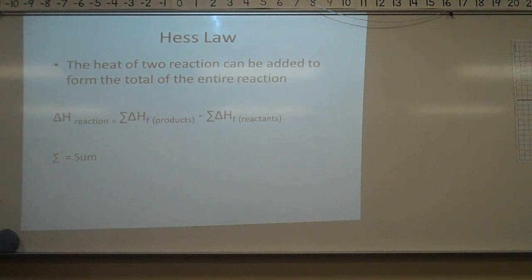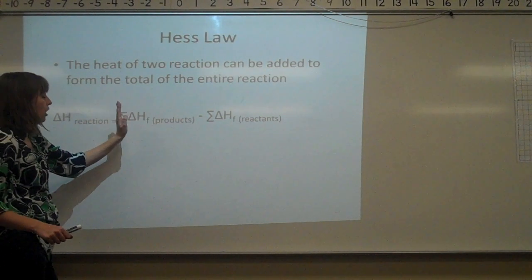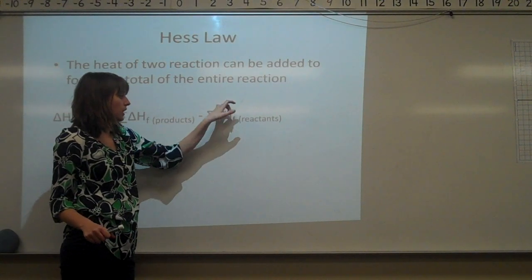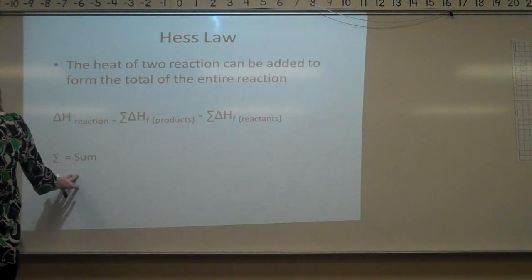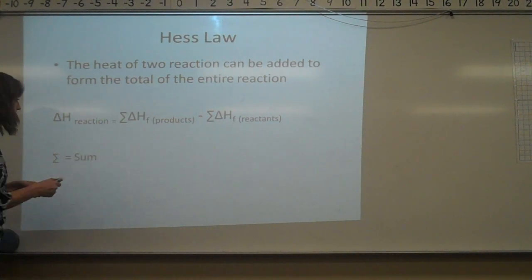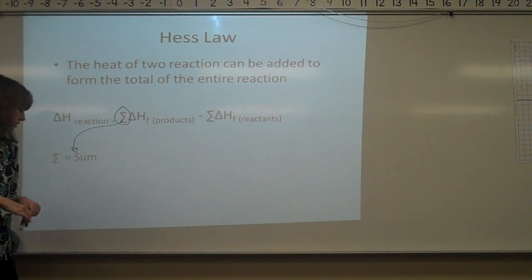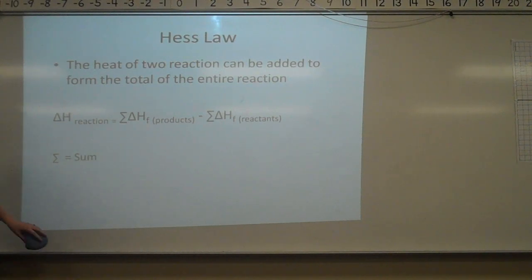The heat of two reactions can be added to form the total enthalpy of the entire equation. The delta H of the reaction equals the sum of the delta HF of the products minus the sum of the delta HF of the reactants. The sigma symbol simply means sum — you add them all together.